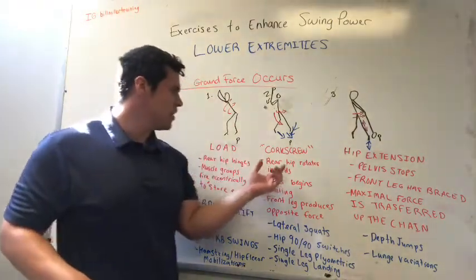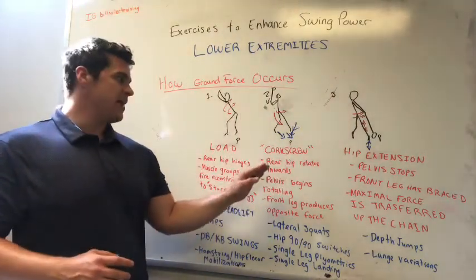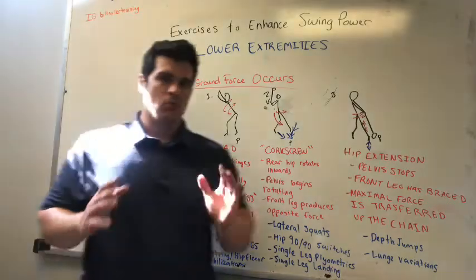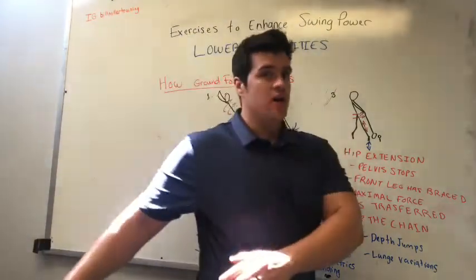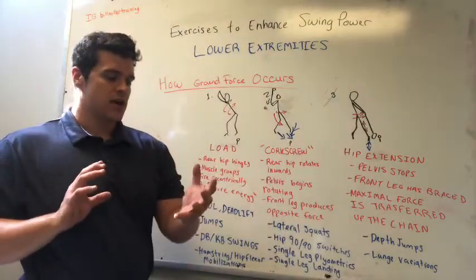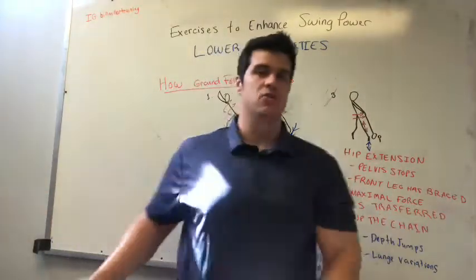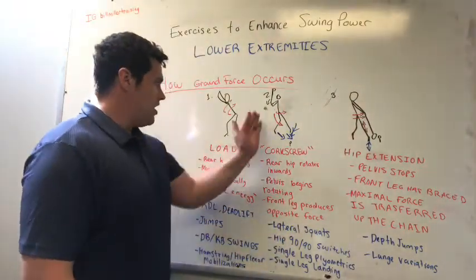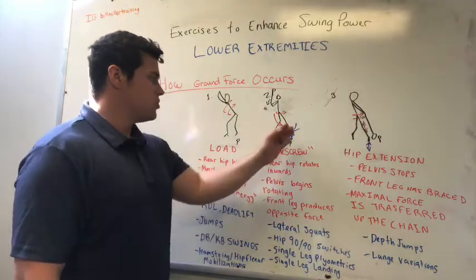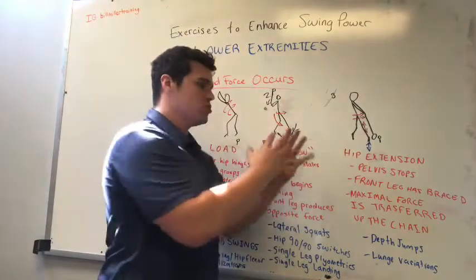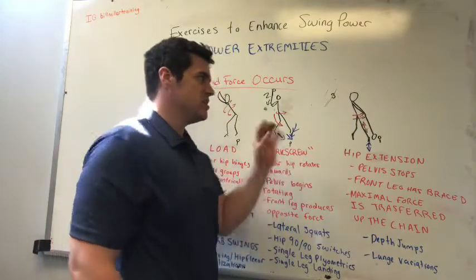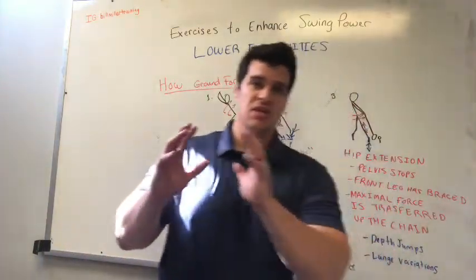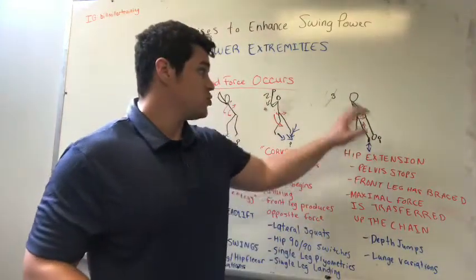Then we have the corkscrewing action, where the rear hip begins turning inward and the rotational aspect of the swing begins. Many people simply push off the back leg without creating rotation, which loses that transitive property of the rotational sequence — creating more of a pushing action with far less output from the swing. The pelvis rotates quickly, and then the front leg begins producing opposite force to the back leg, resisting excessive rotation — this is where the front leg brace begins. Without that opposite force from the front leg, the athlete slides forward and cannot effectively transfer energy up the kinetic chain.